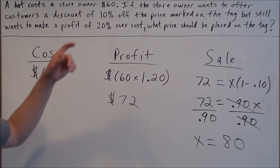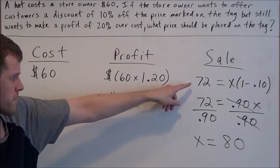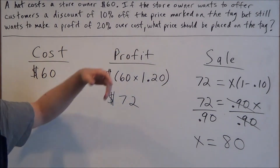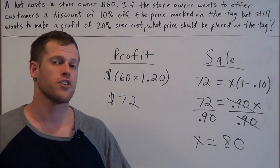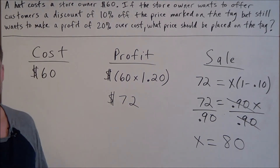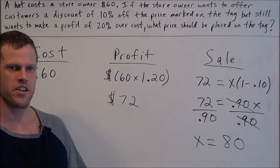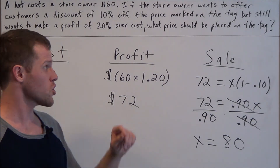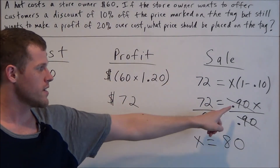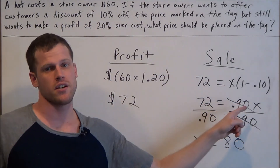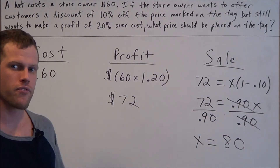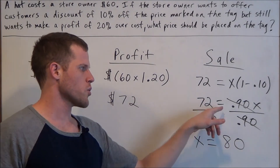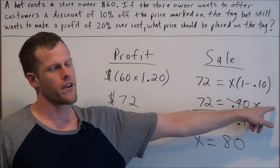Here's a shortcut: anytime you hear the phrase '10% off,' '20% off,' or some other percent off, think about what percent is still on. If I take 10% off, then 90% is still on. Thinking in that frame will allow you to create the equation much faster.